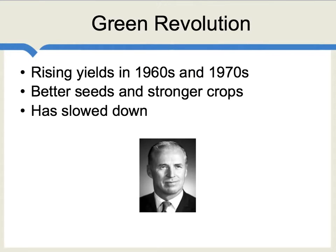India did see major agricultural productivity gains in the green revolution earlier in the 20th century. This brought rising yields in the 1960s and 1970s due largely to better seeds and stronger crops. Yet this green revolution, pioneered by Norman Borlaug, shown here, has slowed down in recent times. For more on the green revolution, you can view our video unit on that topic.